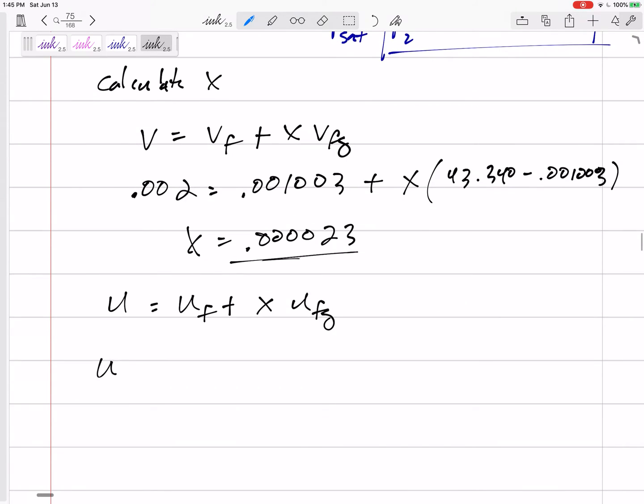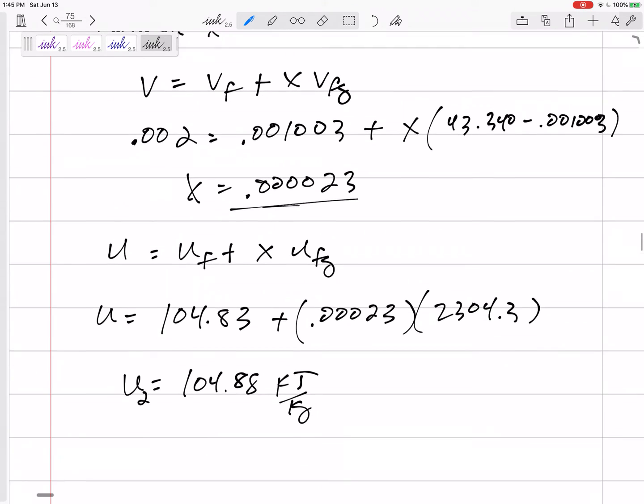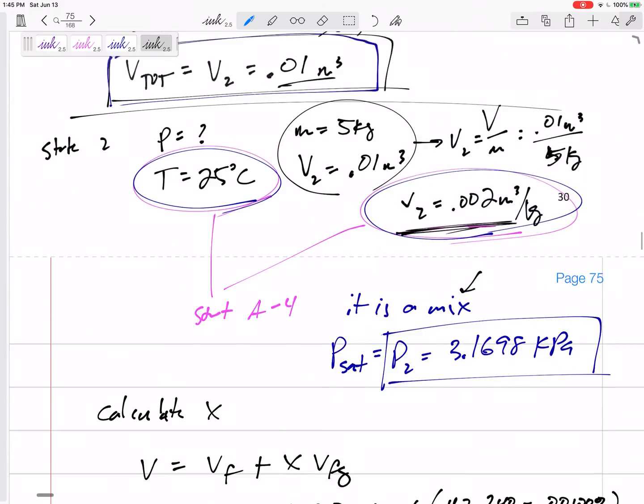So once I know the quality, then I can find any value. I want U2. That would be UF plus X UFG. So still at that property table, the UF at 25 degrees C, 104.83 plus quality 0.0000023. UFG from the property table, 2304.3. I would get a U2, 104.88. Really not very much change because not very much X, not very much of a change from the saturated liquid properties, but there we go. We've got U2.